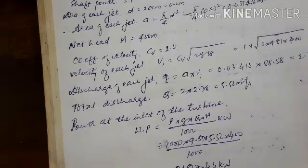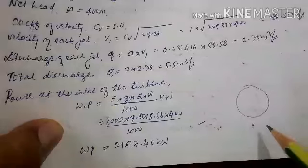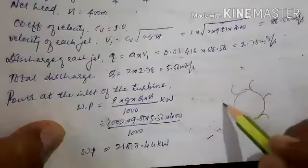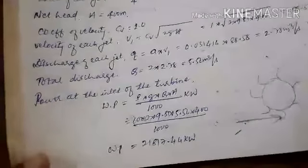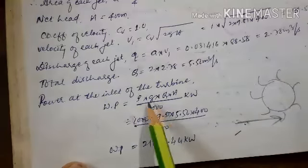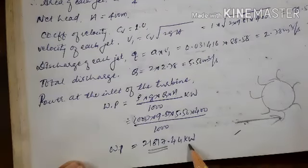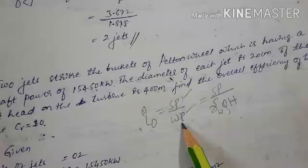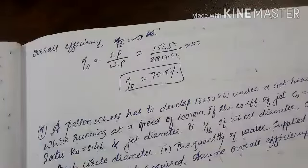Water power at turbine inlet = ρ·g·Q·H / 1000 = γ·Q·H = 21,817.4 kilowatt. Overall efficiency = shaft power / water power = 15,450 / 21,817.4 = 70.8%. This type of problem is generally asked for 12 to 15 marks.